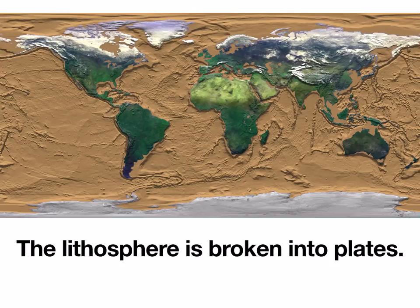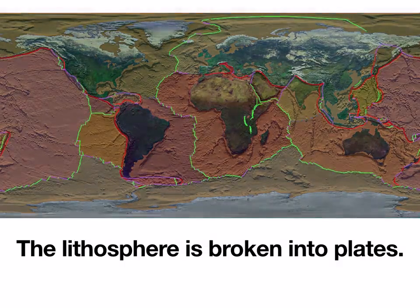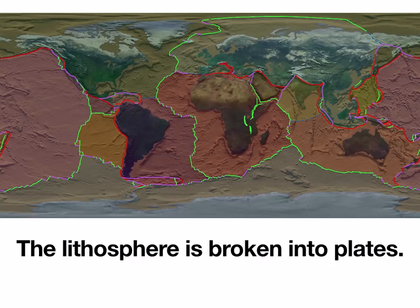The first thing we need to know is this: the outer shell of the earth — which I gave an example of being the magic shell on a scoop of ice cream — this solid outer crust of the earth, we call it the lithosphere. It's actually broken into pieces that we call plates. You can call them lithospheric plates, tectonic plates, or simply plates. This is the solid outer part of the earth that we live on.